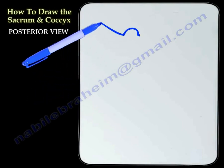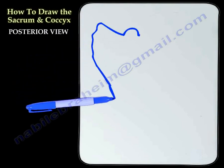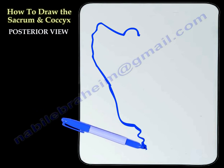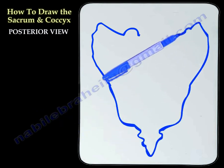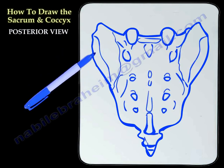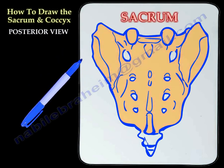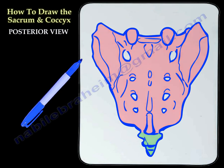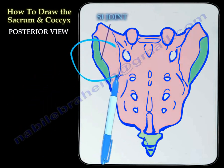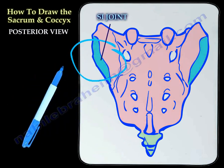This is how to draw the sacrum and the coccyx from the posterior view. Here you can see the SI joint, or the sacral part of the SI joint. It is involved in SI joint dysfunction and pain.